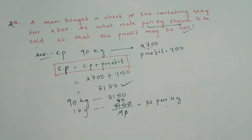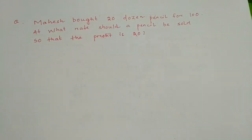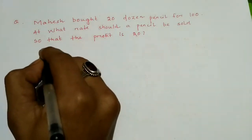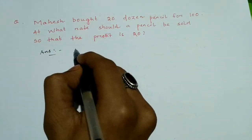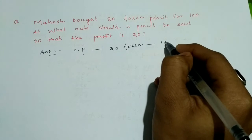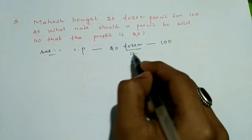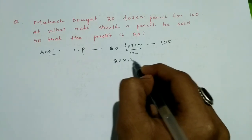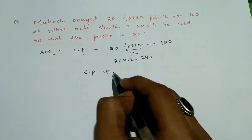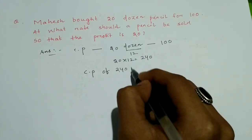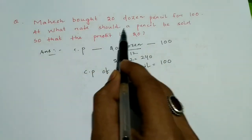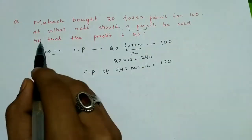Question number three: a man bought 20 dozen pencils for 100 rupees. Writing this down: cost price for 20 dozen pencils is 100 rupees. One dozen means 12 pencils, so 20 dozen = 20 × 12 = 240 pencils. Therefore, cost price of 240 pencils = 100 rupees.